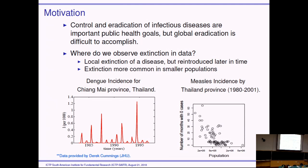The whole point is that to achieve global eradication is very difficult. But what we do notice in data is that we see local extinctions in diseases. What I've shown here are two graphs. The first is some work on dengue with Thailand data. You can see over the years these are the numbers of infections per thousand, with intermittent spikes that are pretty seasonal. The amplitudes change, but there are periods between outbreaks with very few — almost zero cases in some areas.